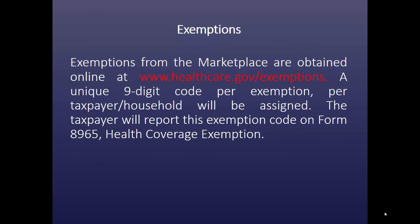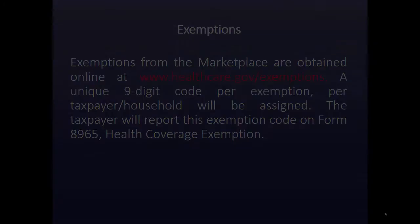Exemptions from the marketplace or healthcare.gov are obtained online. A unique nine-digit code per exemption per taxpayer or household will be assigned. The taxpayer will report this exemption code on Form 8965, which is the health coverage exemption form.